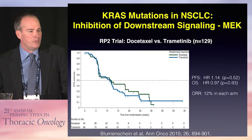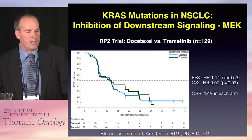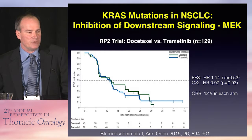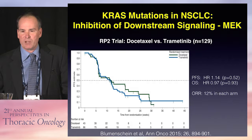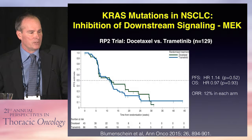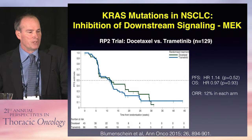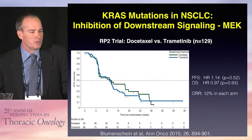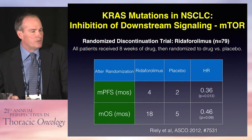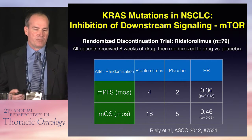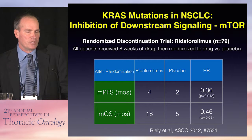Single-agent therapy with a MEK inhibitor has also been evaluated — trametinib versus docetaxel in a randomized phase II trial. Overall response rates were low in both arms, only 12%, and no difference between single-agent trametinib or single-agent docetaxel. Not only is the MAP kinase pathway activated with KRAS, but also the PI3 kinase mTOR pathway.